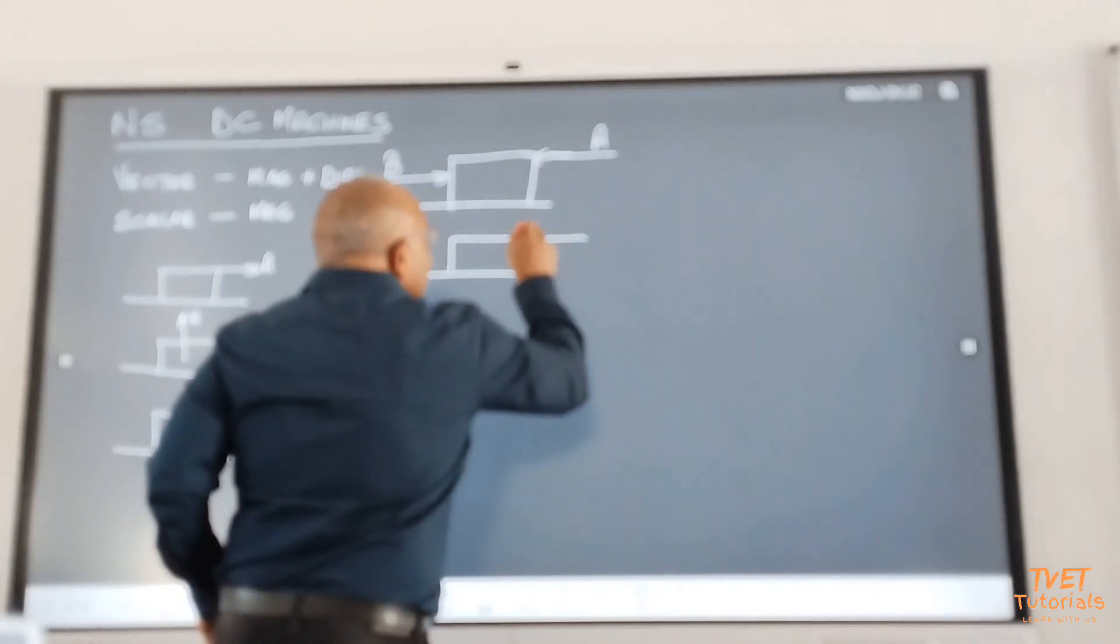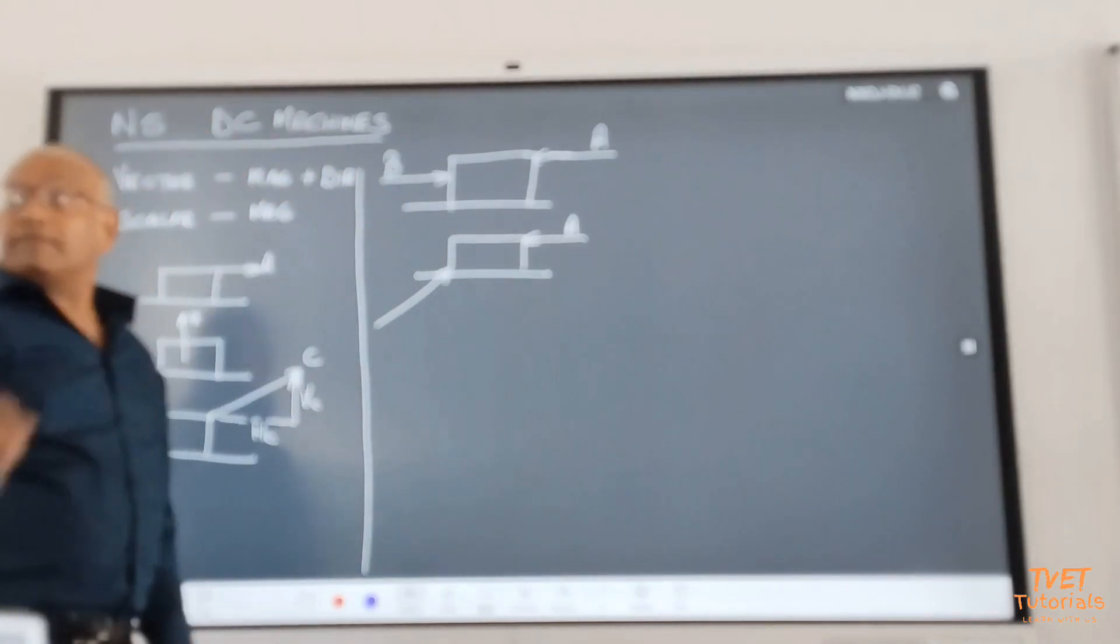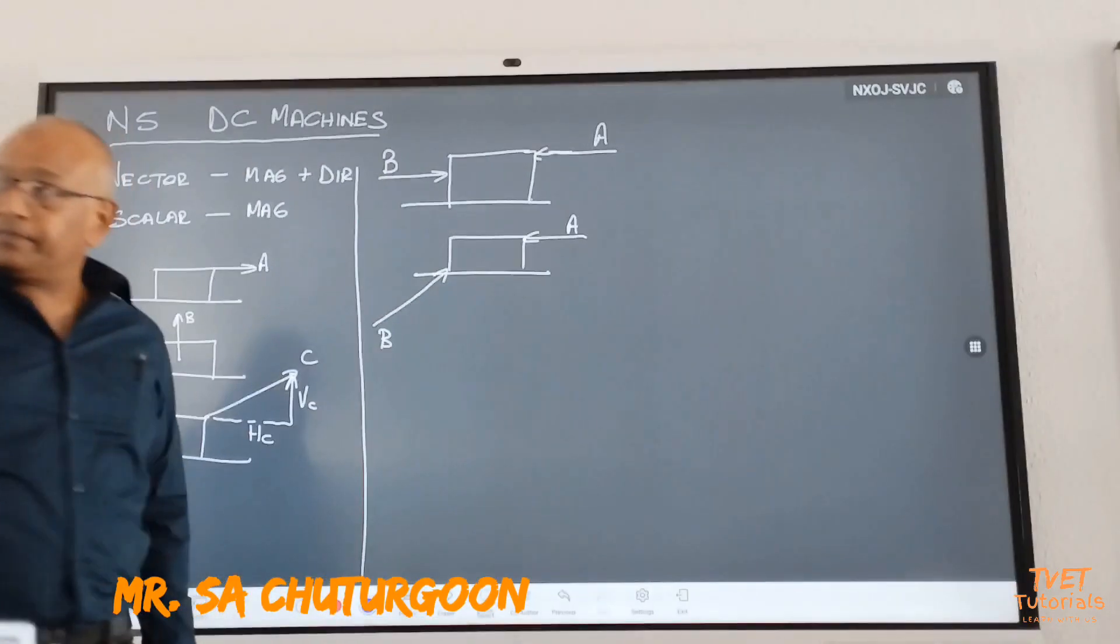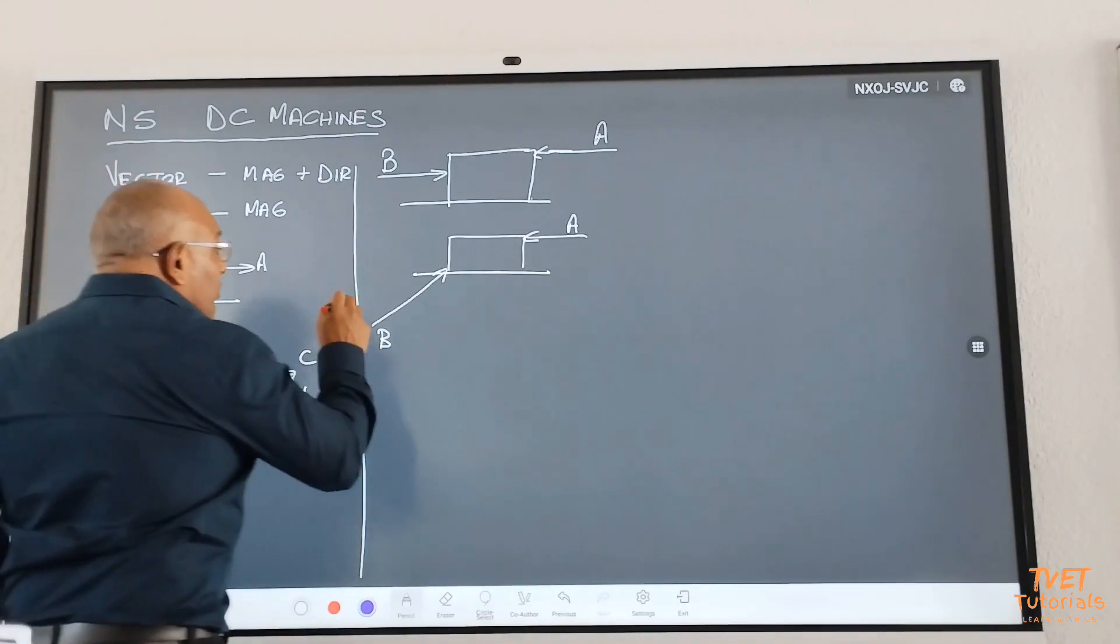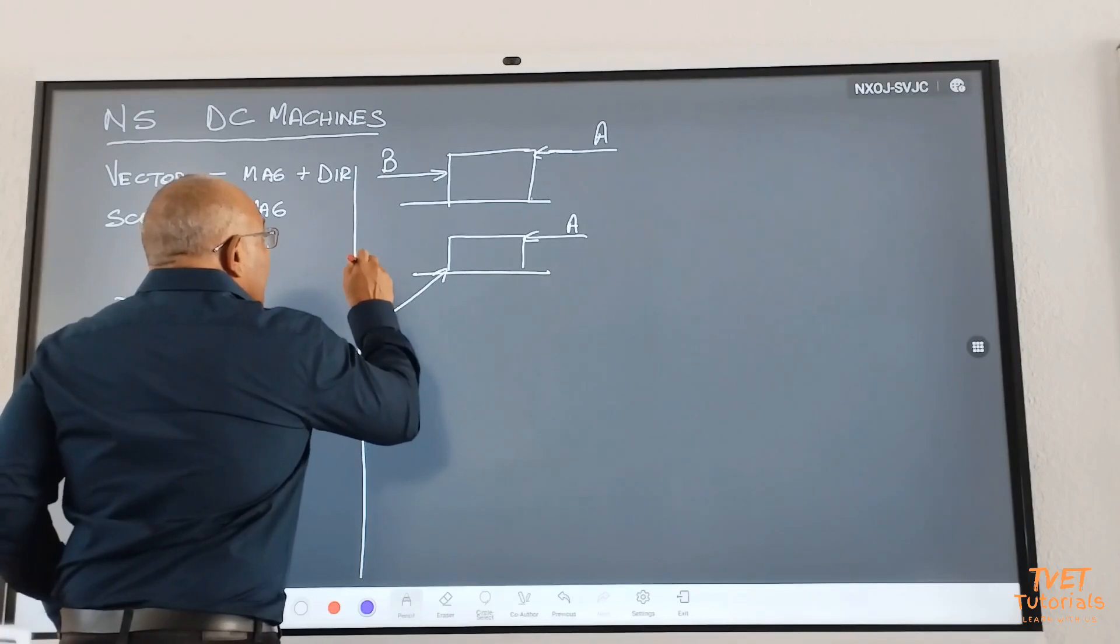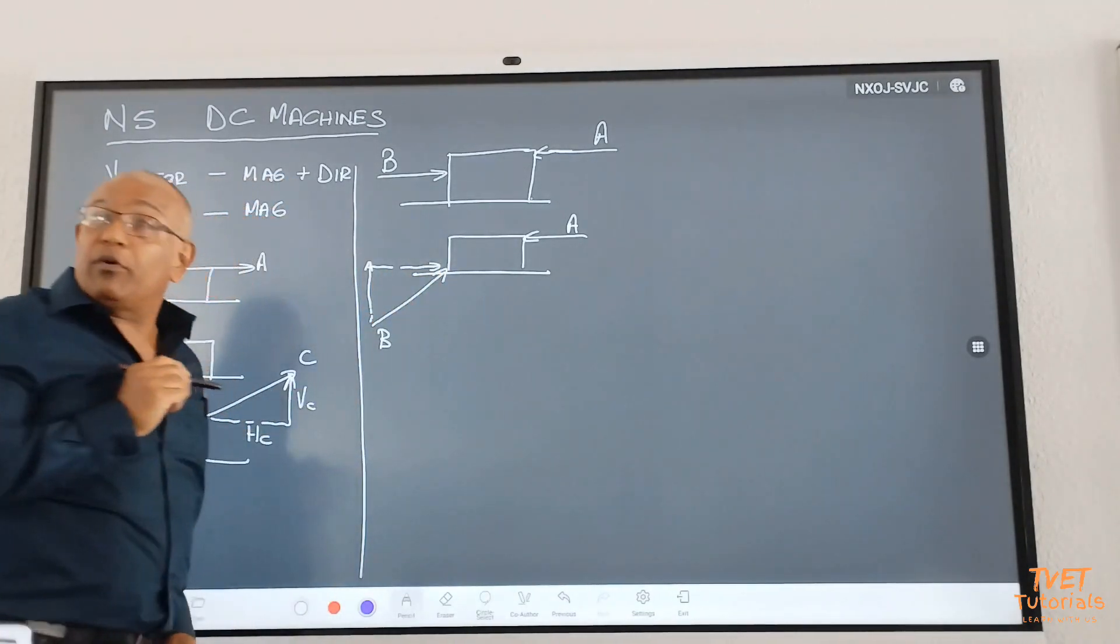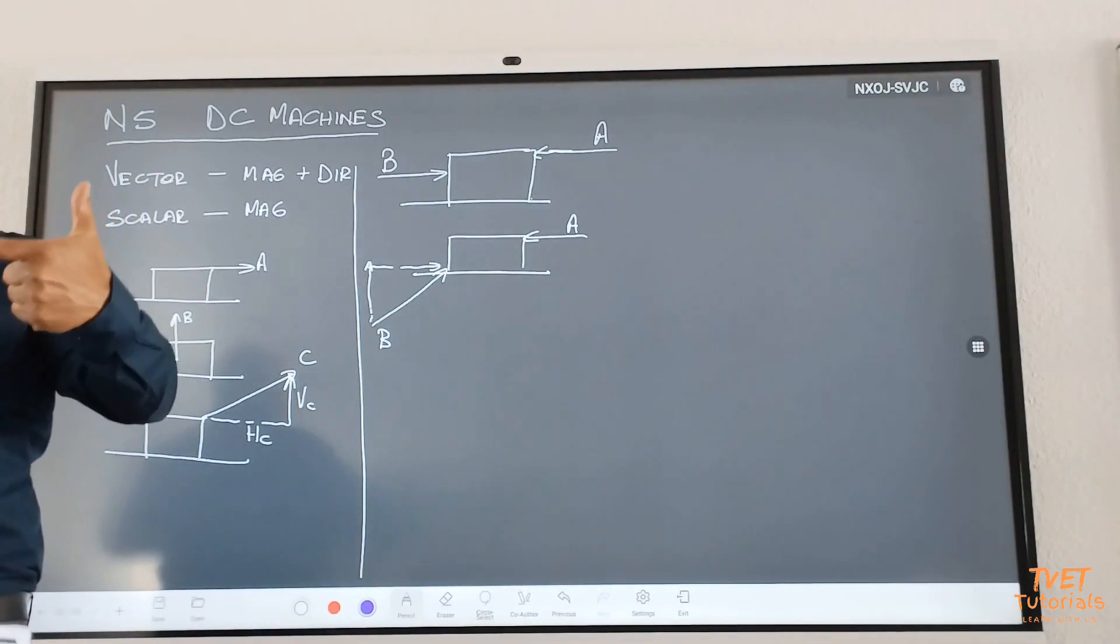If I take the same scenario, here is force A, but now, what is going to happen? Force B is an incline force. It has two components. Let me go and draw the components here. That's the vertical component. That is the horizontal component. What is the horizontal component going to do? It's going to oppose force A.